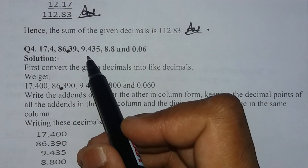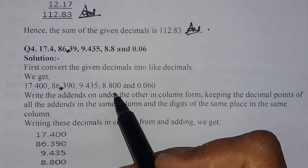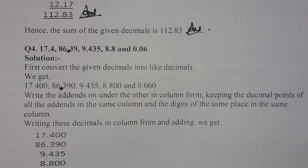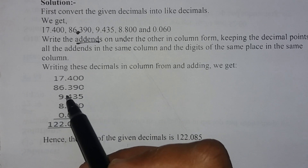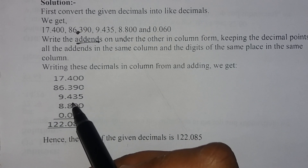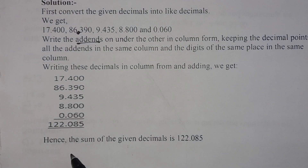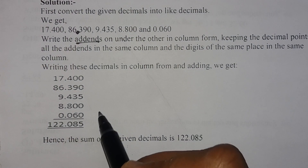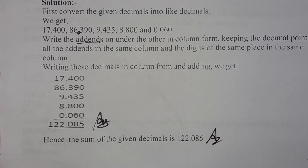After converting: 86.390, 9.435, 8.8 will be 8.800, and 0.06 will be 0.060. Writing them in column form: 17.400, 86.390, 9.435, 8.800, 0.060. After adding all these numbers, the answer will be 122.085.